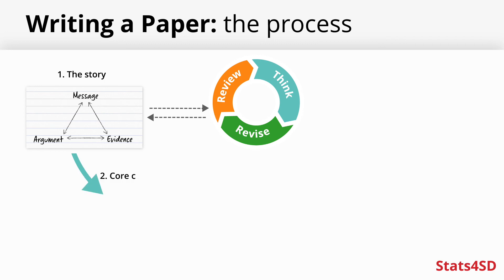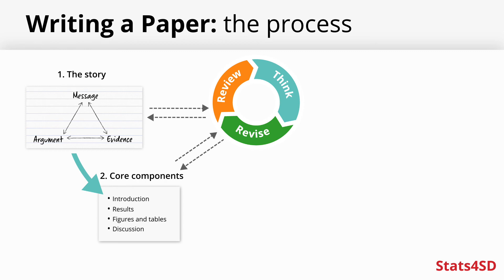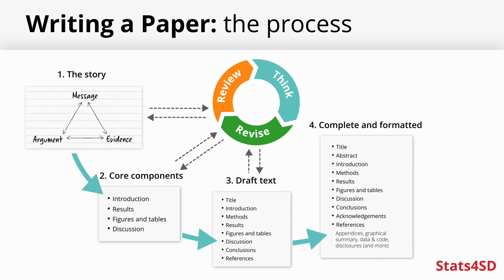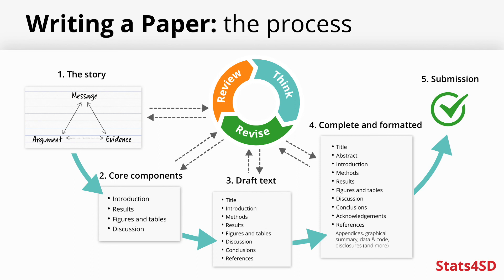Next, add the core components that will provide the substance to your story and review again, revising until it is convincing. Then you can add those other sections that will not actually change the core story. Finally, prepare the text in the format needed for submission — all of that happens before you are ready to send the paper off to the journal. It is hard work and slow, and unfortunately there are no shortcuts.